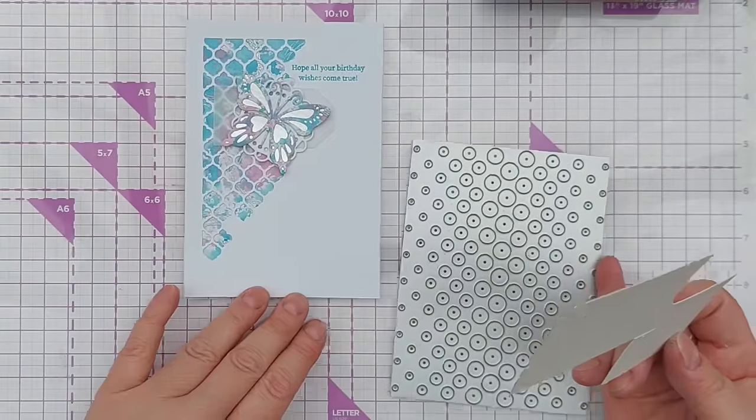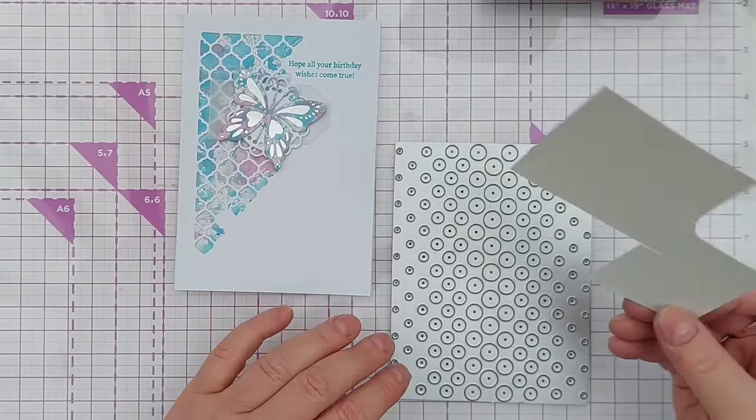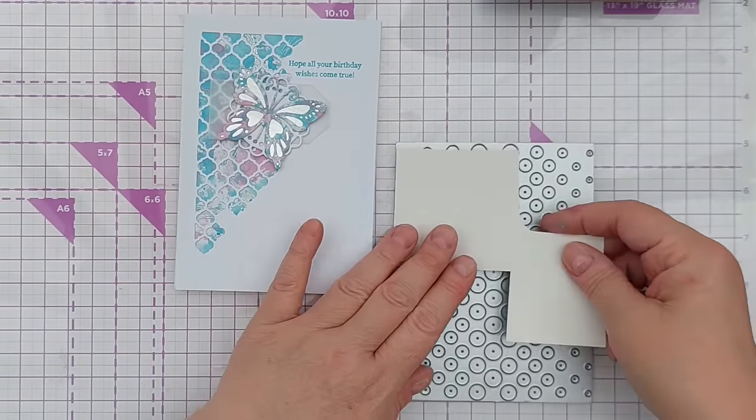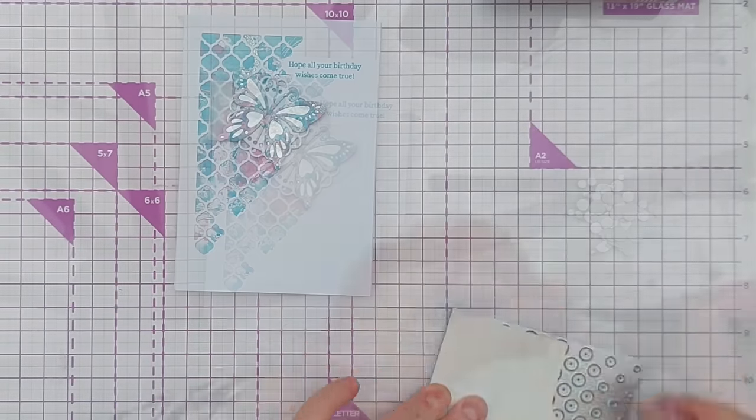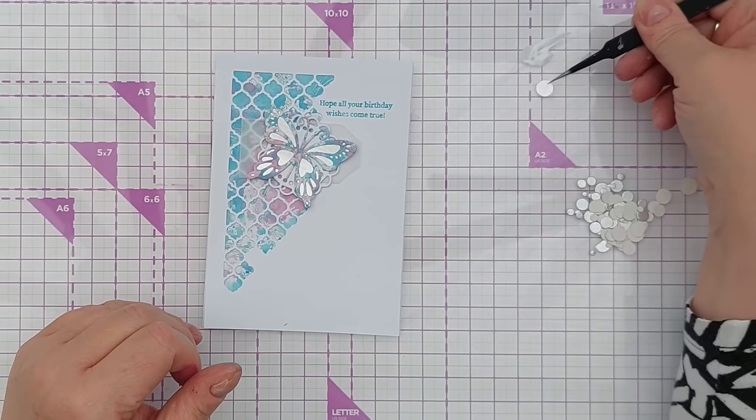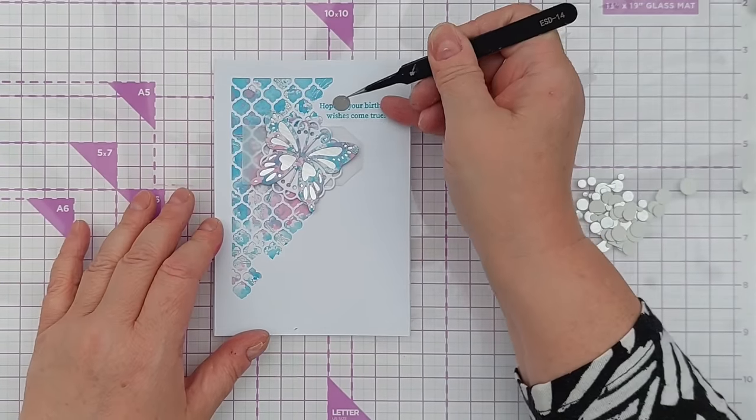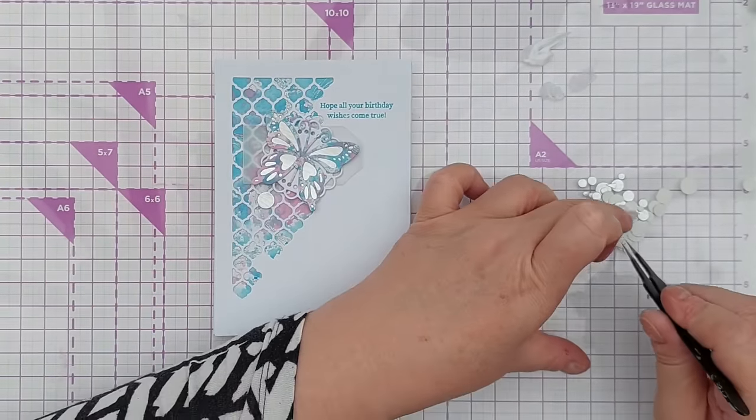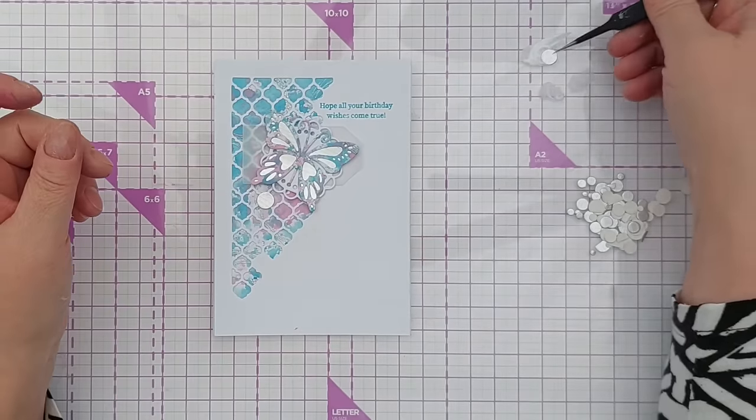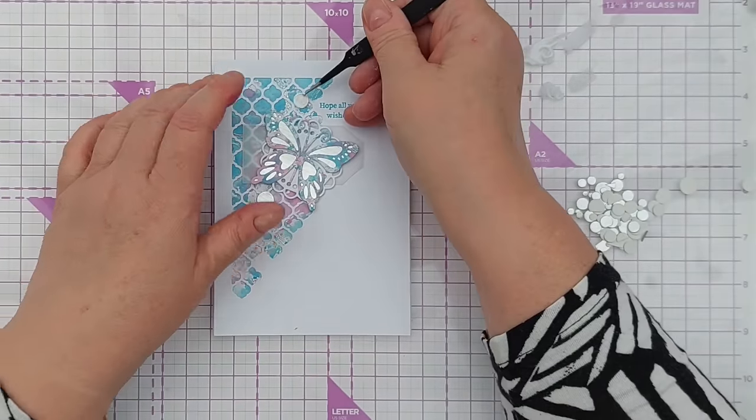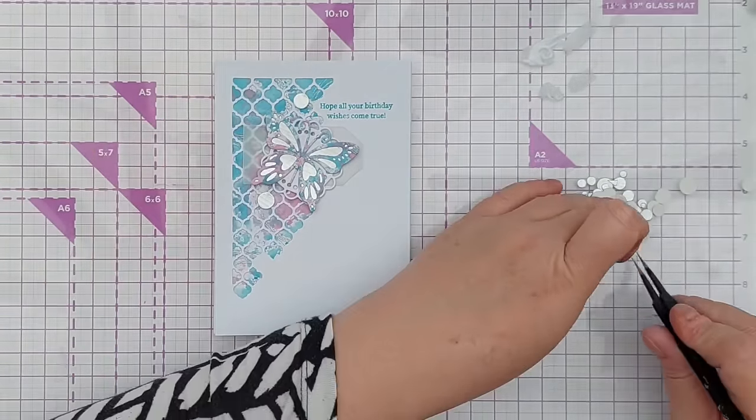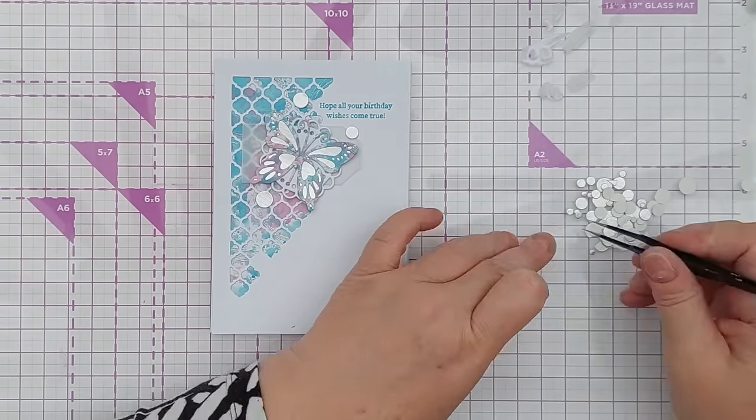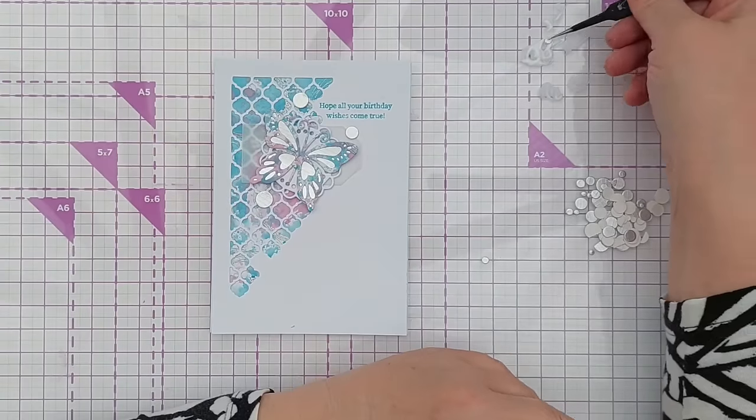As a finishing touch I think I want to add a few silver circles. I've got this bit of silver card left and I'm going to run this through my die cutting machine. Now I've got a nice big pile of silver dots and I'm going to dot them about just as finishing touches. I might put some crystal glaze on top as well just to give them a bit of dimension.